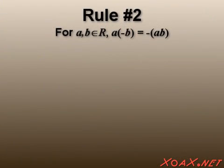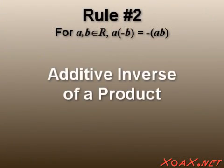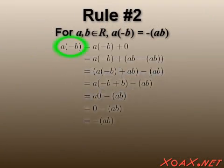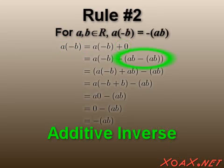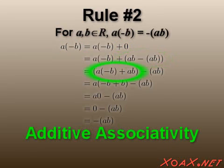The second rule I will call the additive inverse of a product. Again, we start out with the left side of the equation. First, we apply the additive identity. Next, we use the property of additive inverses. Then we use associativity.